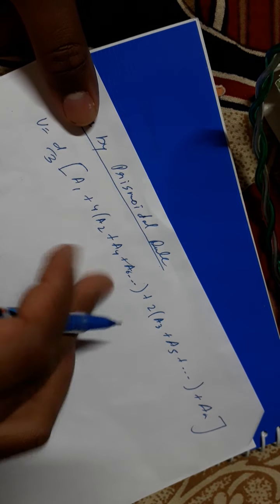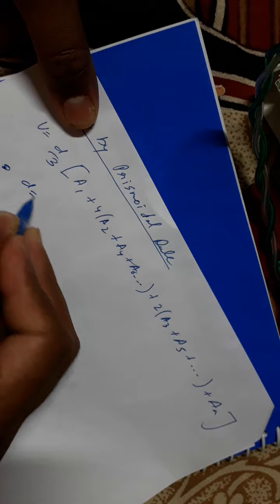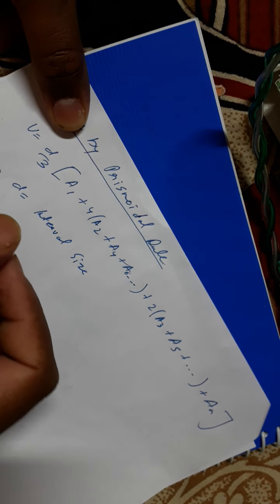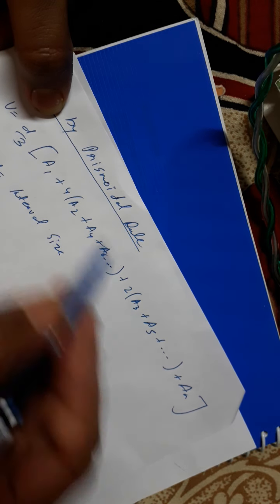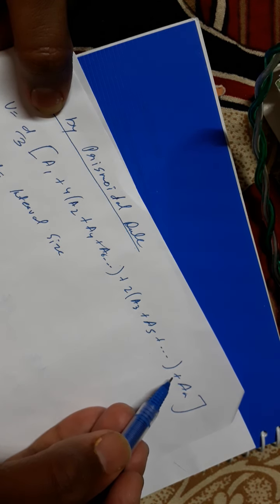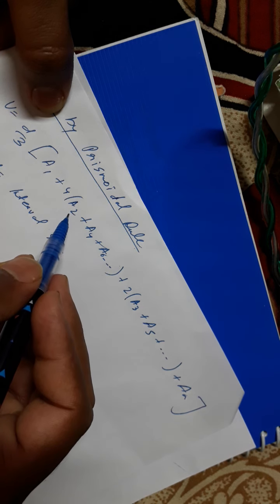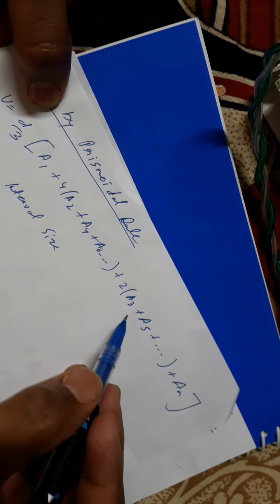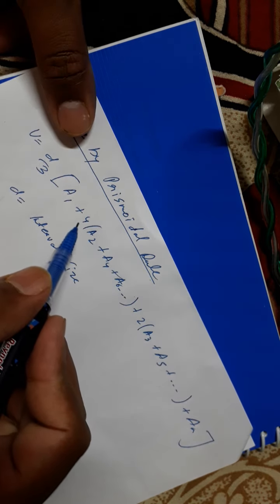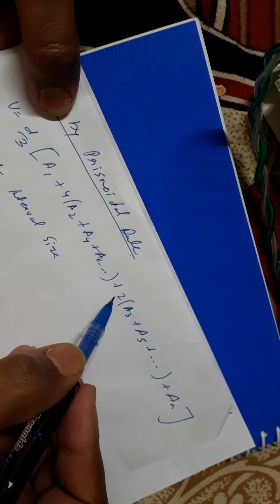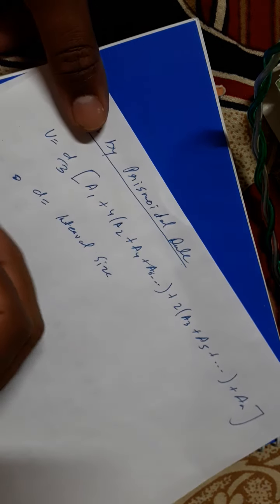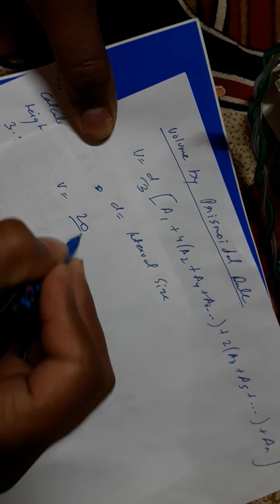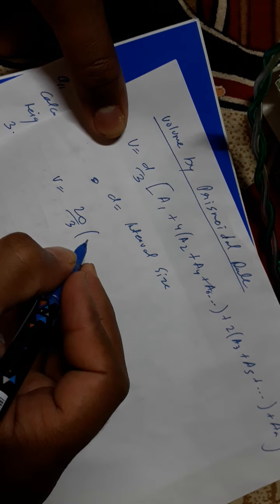This is a simple method. A1 and An is our first and last cross-sectional area values, and these are alternate even values, and these are alternate odd values. Even values shall be multiplied by 4, odd values shall be multiplied by 2. So we put the values in the formula.